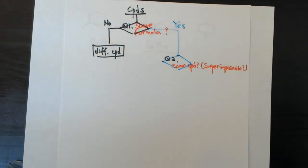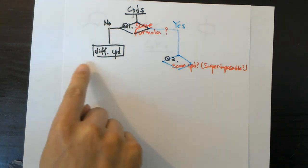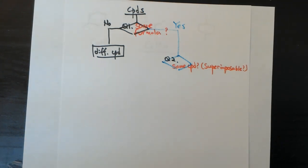So those ring and chain structures are isomers of each other, but the one with a different molecular formula is a completely different compound. To summarize: if the compounds have the same formula, you move on to the next question. If they have different formulas, they are different compounds, full stop. Even with the same formula, they still might be the same compound — you have to check.